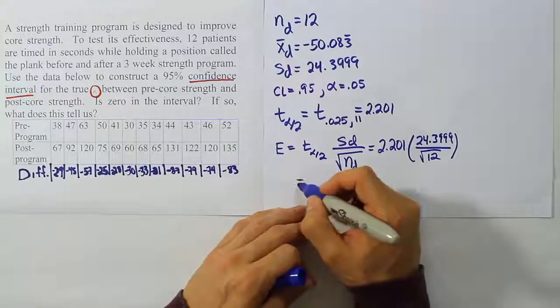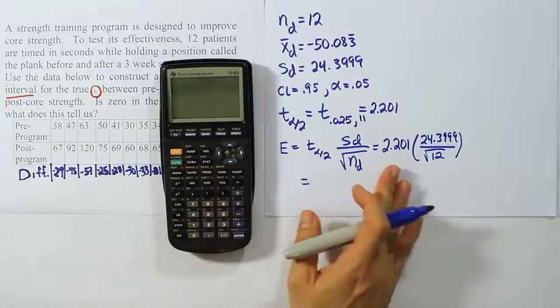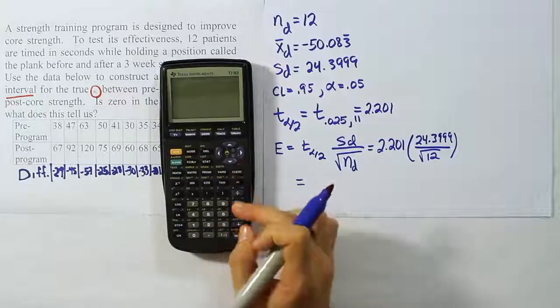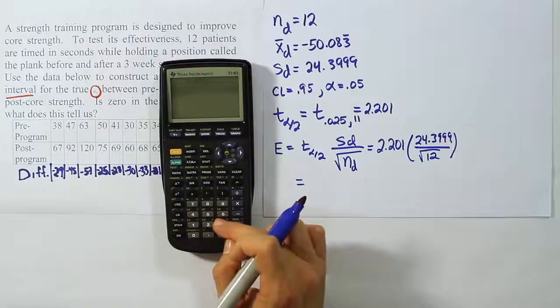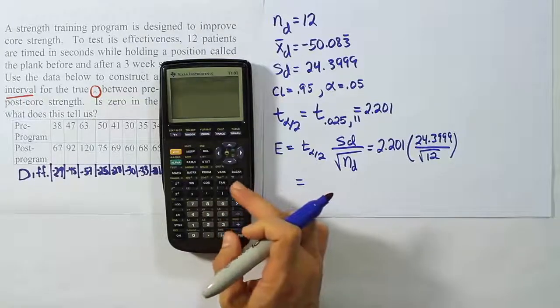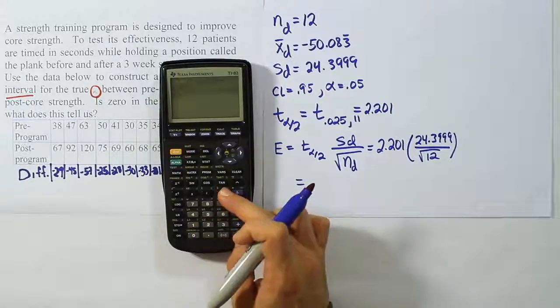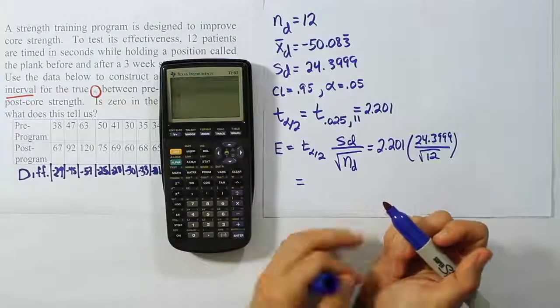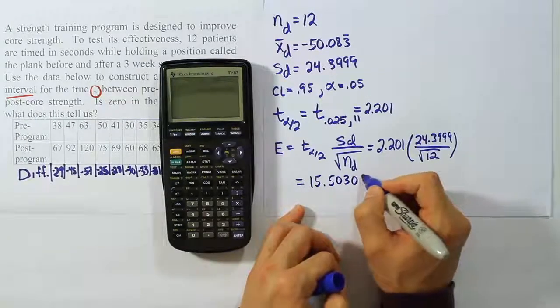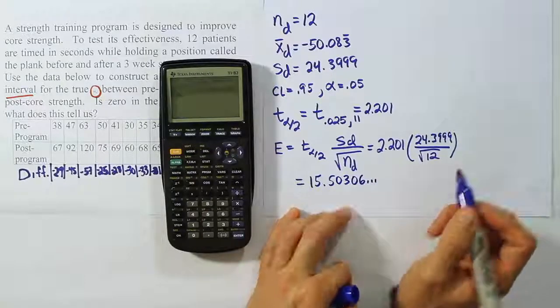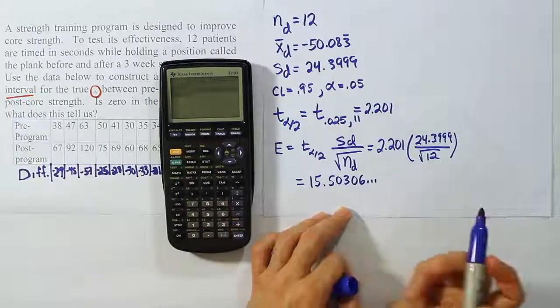Okay, so we're going to say that it's 2.201 times 24.3999 divided by the square root of 12. And when we work that out, we end up with the answer 15.503. So there's our margin of error. I'm going to store that in my calculator as X so I have it for later use.